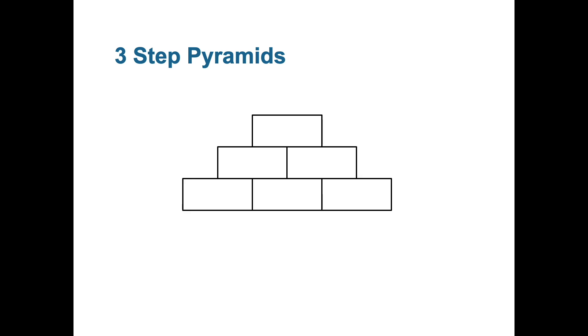Here's a new three step pyramid. This time, let's just put some slightly larger numbers in. Don't forget, they have to be consecutive. So 100, 101, 102.